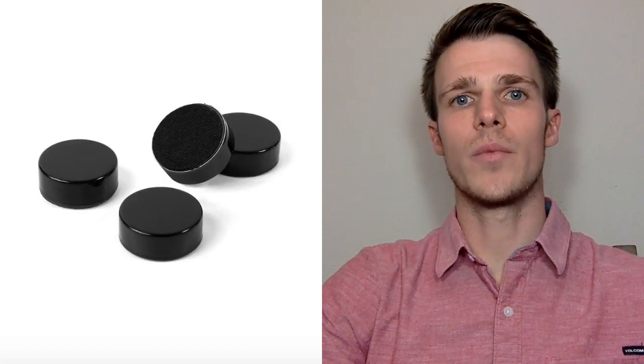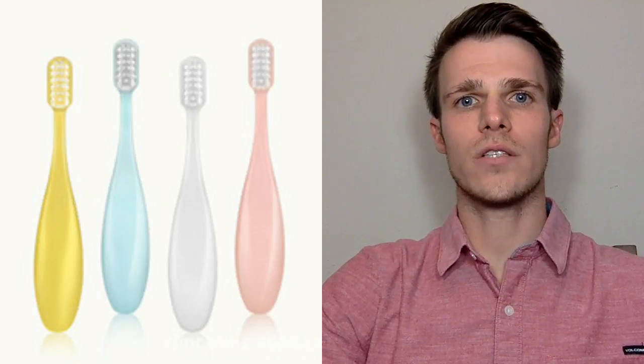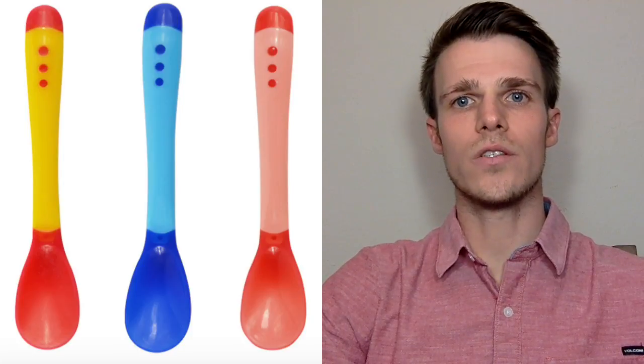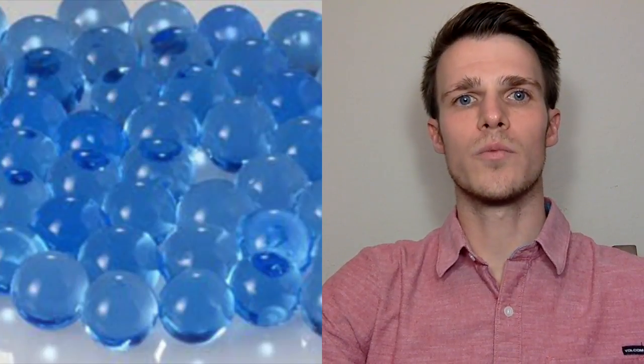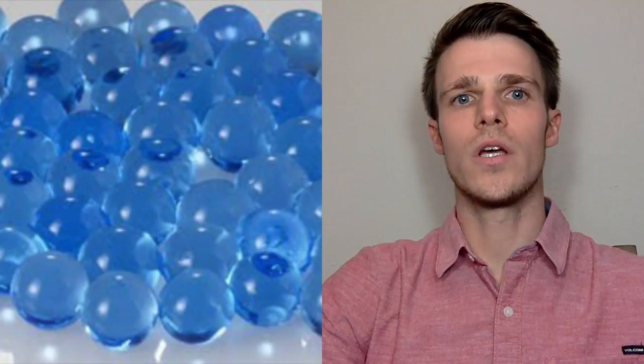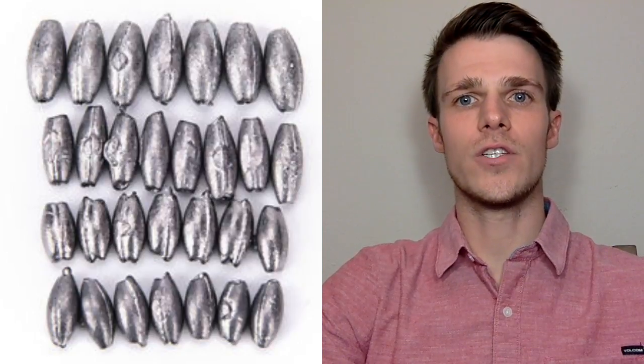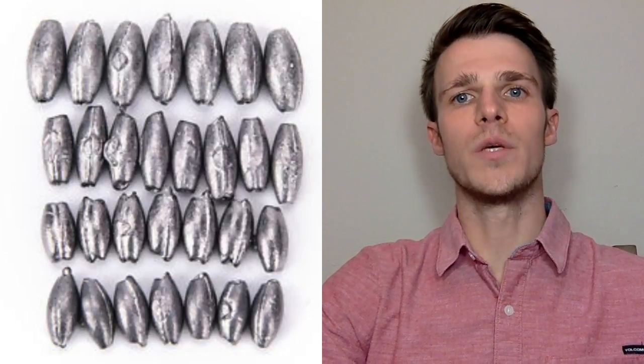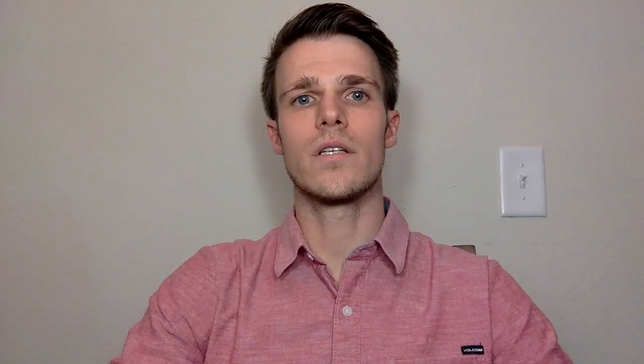Other ingested objects in children include magnets commonly found in toys, long objects such as toothbrushes, spoons, or batteries, superabsorbent polymers, and objects containing lead such as fishing sinkers, BB gun pellets, and some toys. Esophageal foreign body impactions, however, more commonly occur in adults, with the most common foods causing impaction being meat, fish, and chicken bones.